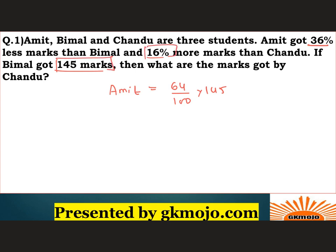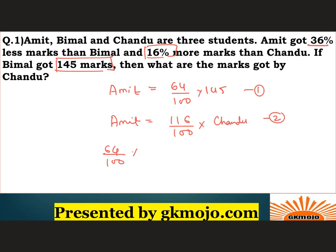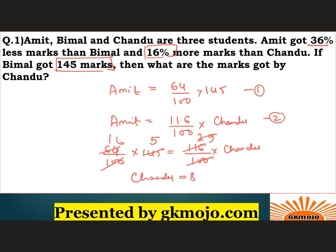Also, Amit has got 16 percent more marks than Chandu. So in terms of percentage, this will be written as 116 upon 100 into Chandu. This is what Amit has scored. So just equate equation 1 and equation 2: 64 upon 100 into 145 equals 116 upon 100 into Chandu. The 100s get cancelled and solving this, Chandu has scored a total of 80 marks. You just have to understand the concept of percentages used here and then equate both equations.